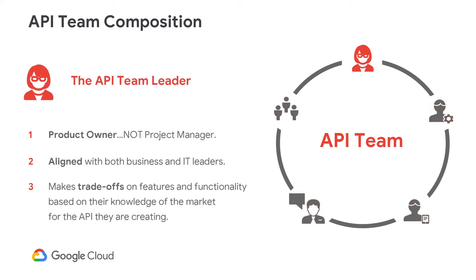The API team leader is essentially your product owner — note that I said product owner and not project manager. As mentioned before, the API team we're suggesting is based off the standard Scrum model, so the API team leader is essentially your product owner in Scrum. The team leader should be aligned with both the business and IT, and have a good understanding of the needs of the end consumer, for example, the app developer. The team leader also helps create, refine, and prioritize the scope for the API team, and will make the call if trade-offs are needed in the event that the API team doesn't have the bandwidth to complete all the items.